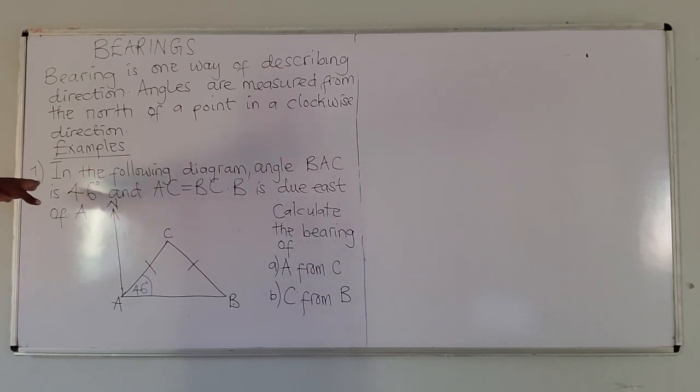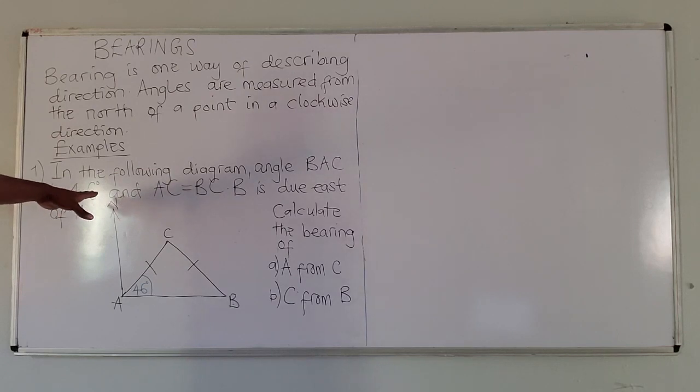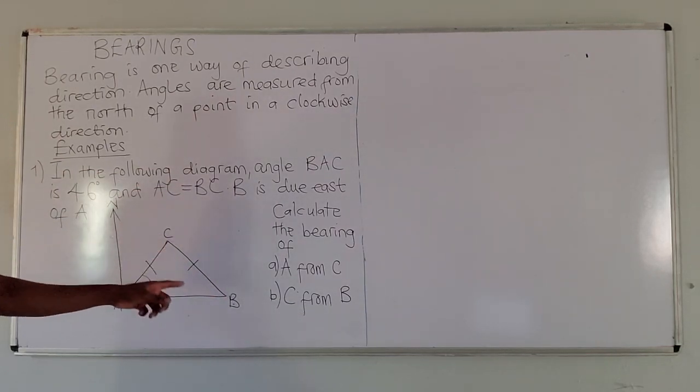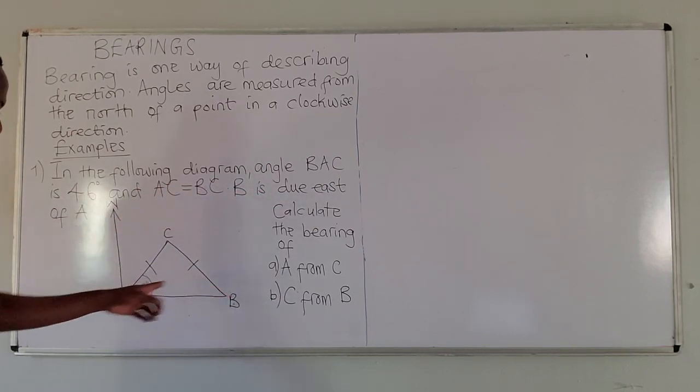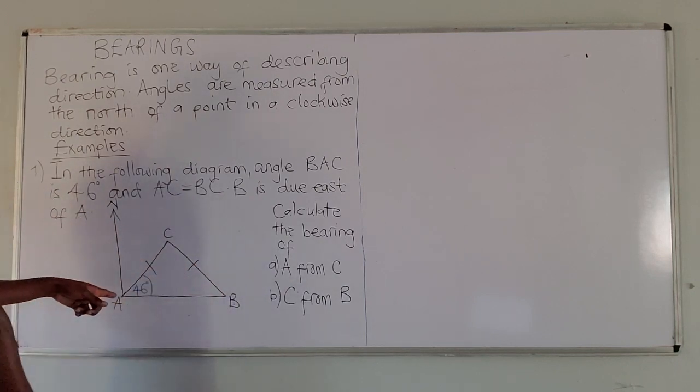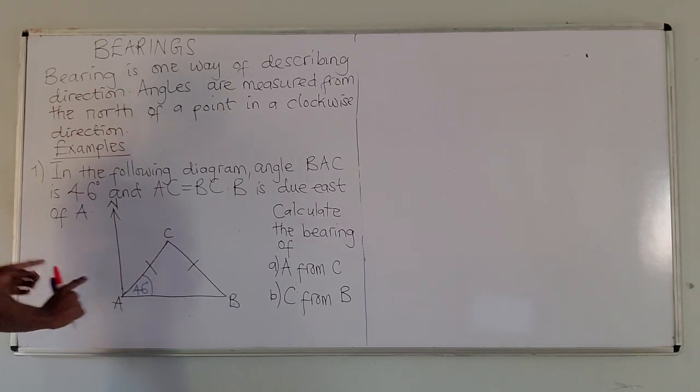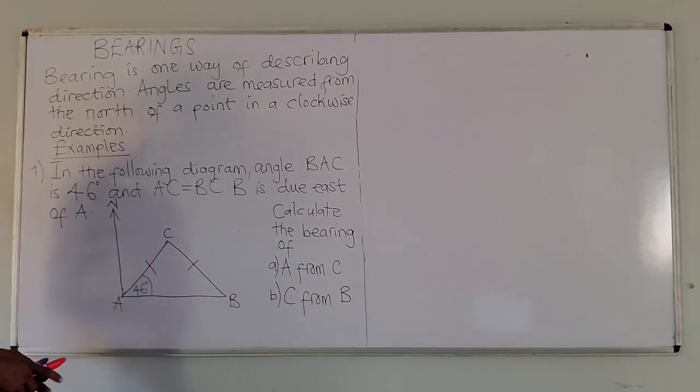The first example: in the following diagram, angle BAC is 46 degrees and AC equals BC. B is due east of A, which means at the right angle from A. B is at the right angle from point A.